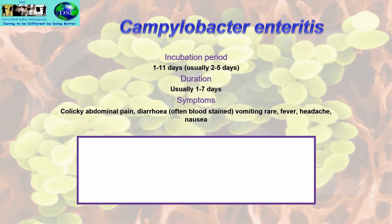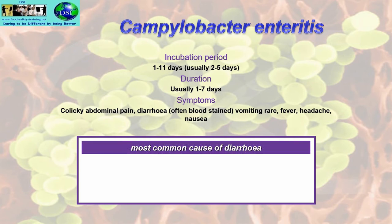Symptoms include colicky abdominal pain, diarrhoea — often bloodstained — vomiting is rare, and you sometimes get fever, headaches and nausea. It mainly affects the lower part of the body. It is the most common cause of diarrhoea in the UK, and probably the world today.